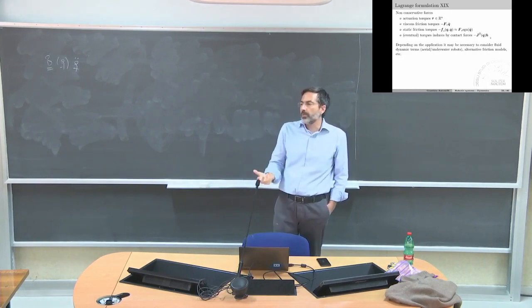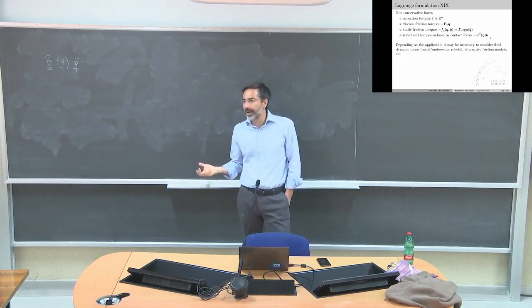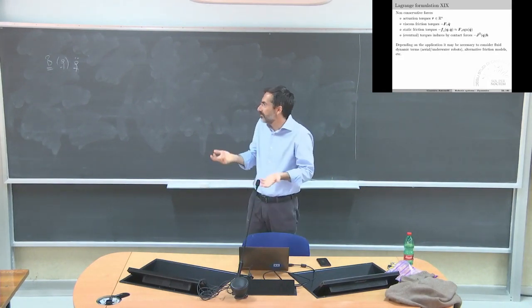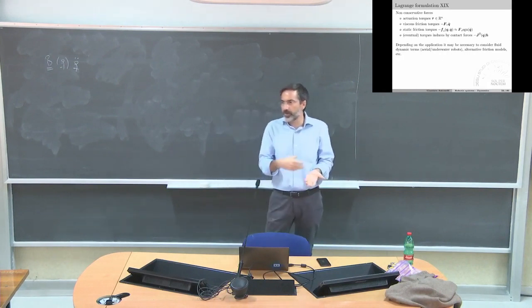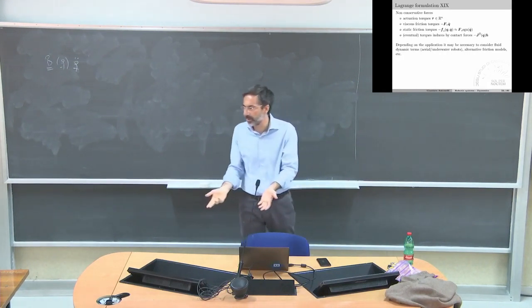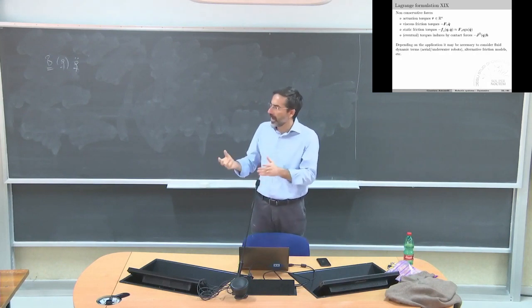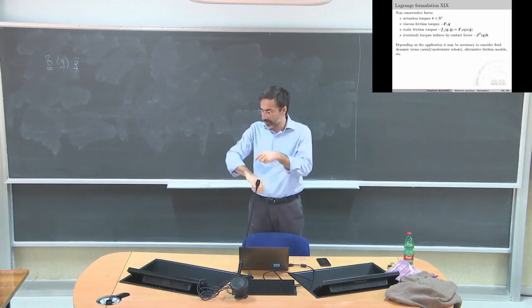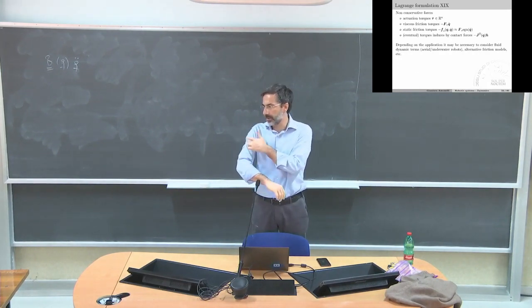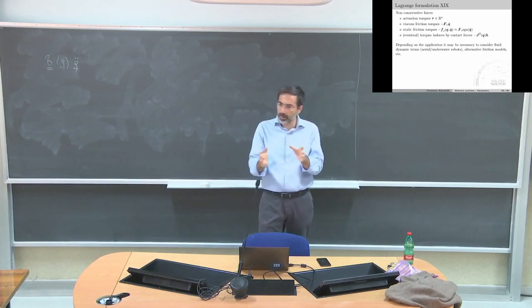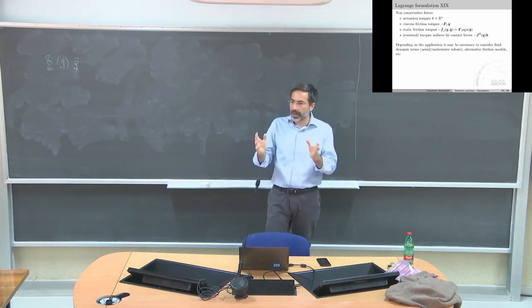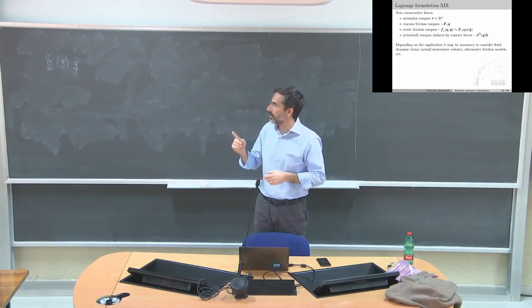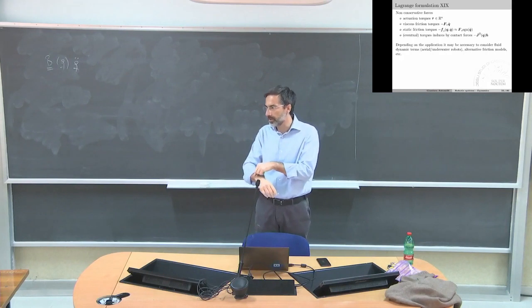This is also a simplified term because you can have contact everywhere in a structure. It's not difficult to take into consideration. If you want to have a more advanced control system, you can consider contact in different places. Actually, you can also estimate that. By knowing the dynamic model, you can estimate if you had contact or not, and you can estimate where and the force and moment of your contact.